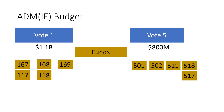Understanding how these funds work is very important, especially if you're on the portfolio analysis team, because when you start extracting data from Dremis and you're trying to see where money was going and what we were doing, these are some of the fund codes you'll be using to produce your analytical work. We have this big Vote 1 bucket with $1.1 billion, but then we use smaller funds such as 167, 168, 169, and so forth to fund specific projects and activities. The same thing happens with Vote 5.